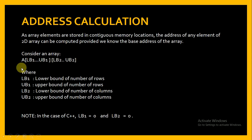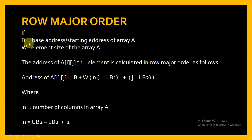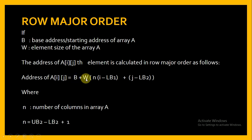So we consider a general array A with LB1, UB1 (lower and upper bound of row) and LB2, UB2 (lower and upper bound of column). In C++, LB1 and LB2 are both 0. In row major order, if B is the base address and W is the element size, then the address of element A[I][J] is: Address = B + W * (N * (I - LB1) + (J - LB2)), where N = UB2 - LB2 + 1.